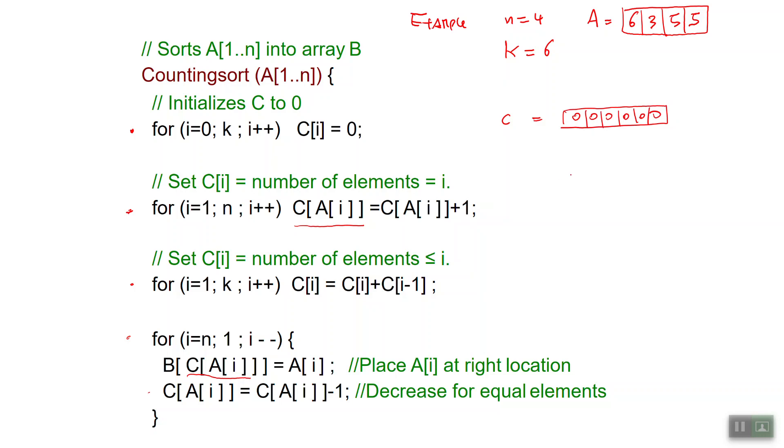The first location in the array C should be the number of elements equal to 1. The number is 0 because I don't have the entry 1 in A. The second location should be the number of elements equal to 2 which again is 0. Then I have a 1 for my 3. I have a 0 for 4. I have a 2 for 5 and I have a 1 for 6. This is the result of the array C after the second for loop.